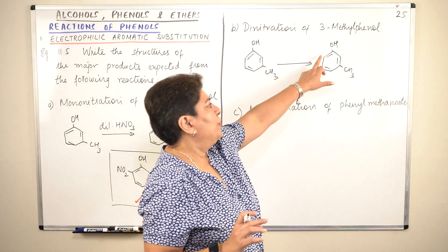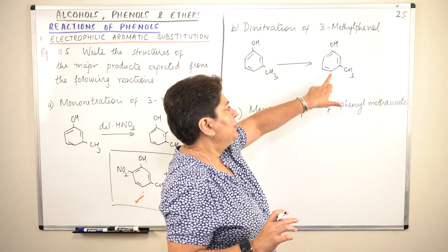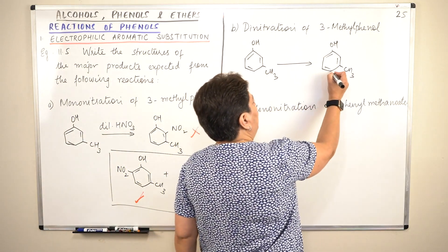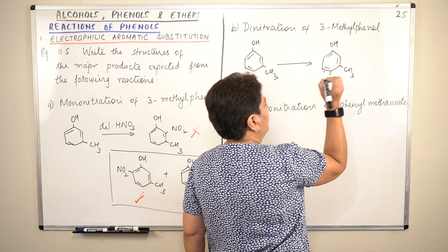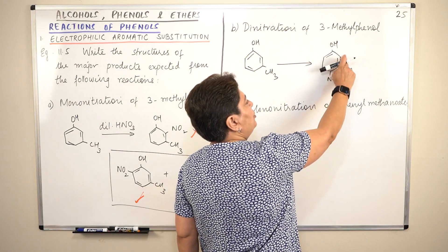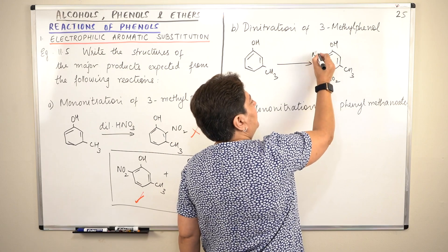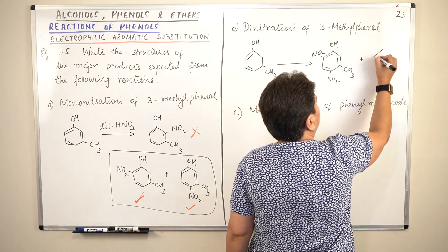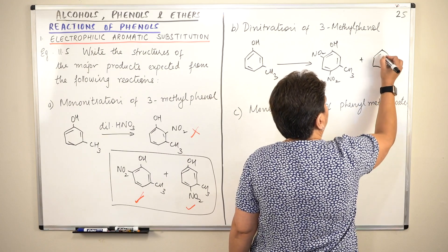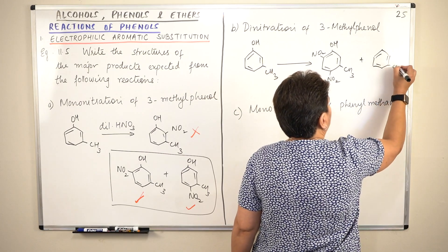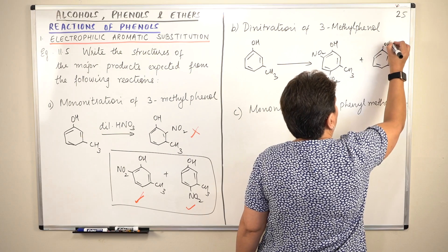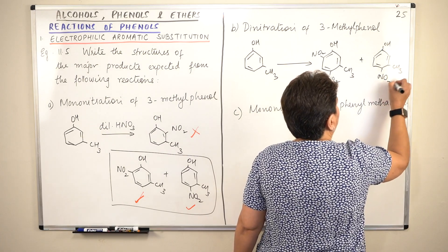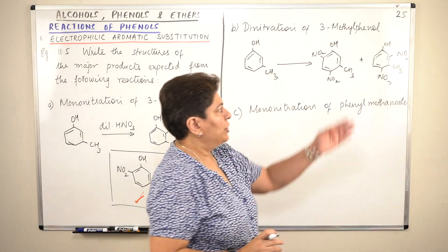The two nitro groups have to go at the ortho and para position. There are two ortho positions and one para position. Para comes in first. Nitro comes here. And the other nitro would not go here. It would try to go here. So this would be your major product. And the minor product would be methyl, OH, NO2 is already here, and NO2 here.